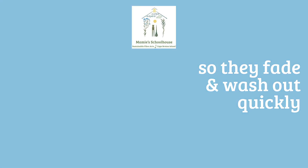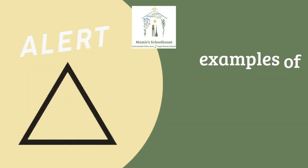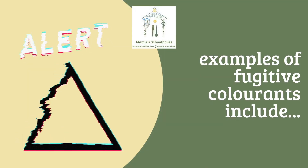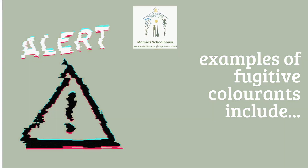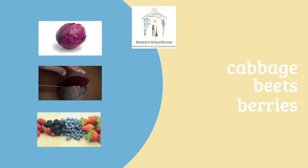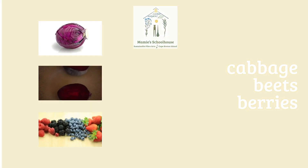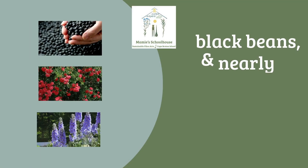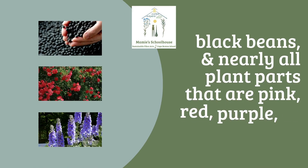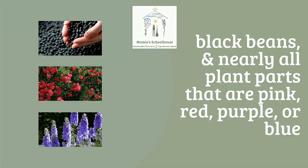Examples of some highly fugitive colorants — often incorrectly promoted as dyes — include cabbage, beets, and berries, black beans, and almost every plant part that is pink, red, purple, or blue.